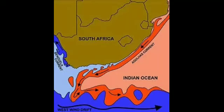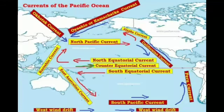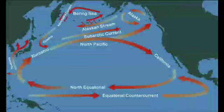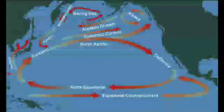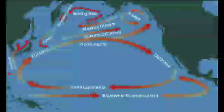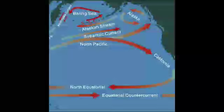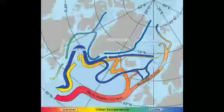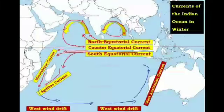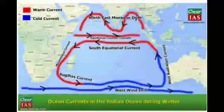The currents of the Indian Ocean are closely controlled by the seasonal south-west and north-east monsoons. In the summer season, in the northern part of the Indian Ocean, the monsoon winds blow from south-west to north-east, and the ocean currents follow the general direction of the summer monsoon. In the winter season, the monsoon winds blow from north-east to south-west, and influenced by the direction of the wind, the ocean currents flow from north-east to south-west.